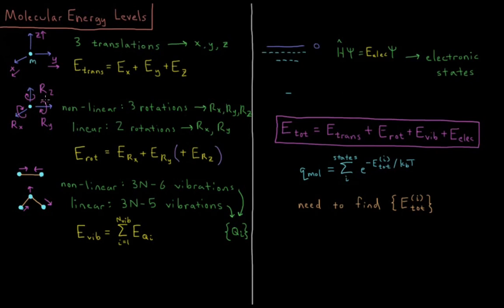For a linear molecule, if it's aligned along the Z axis, rotating around the Z doesn't displace any atoms, so that actually isn't a rotation. So that's why you have two rotations for linear molecules and three for non-linear molecules.